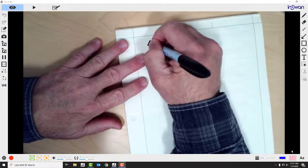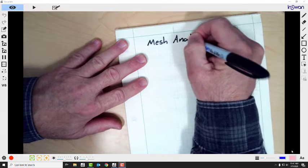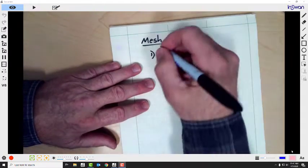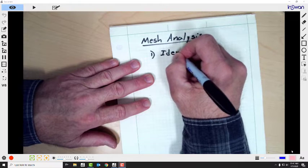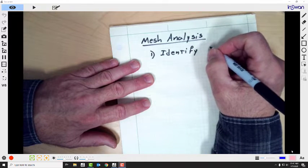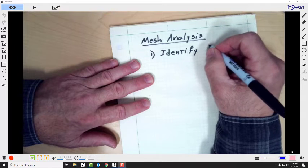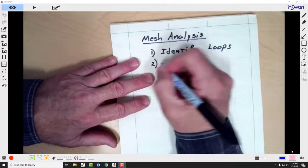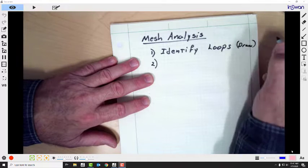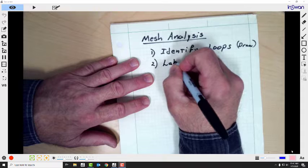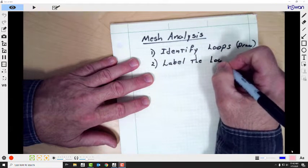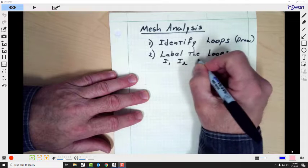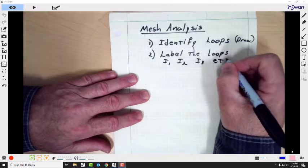So we're going to do mesh analysis. What are the steps? What is the first step? Well, identify the loops, which includes drawing the loops. Label the loops. Usually it's something like I1, I2, I3, etc.